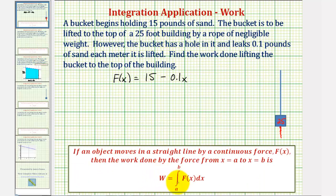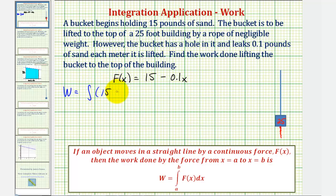Work is equal to the definite integral of our force function f of x from a to b — in our case from 0 to 25 feet. So the work is equal to the integral of 15 minus 0.1x from 0 to 25.